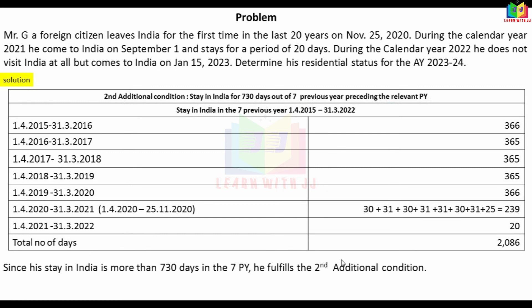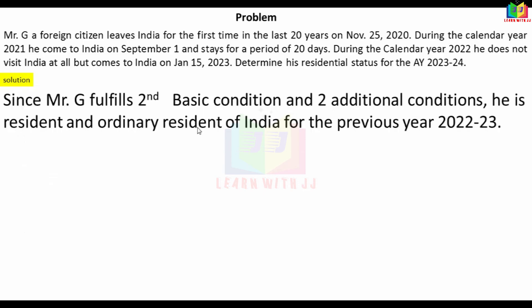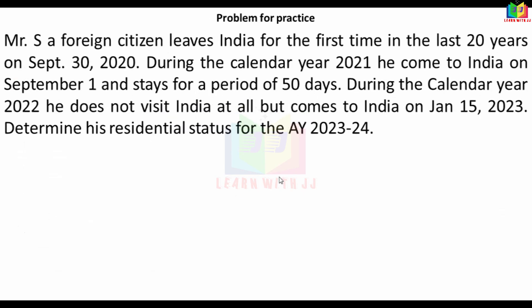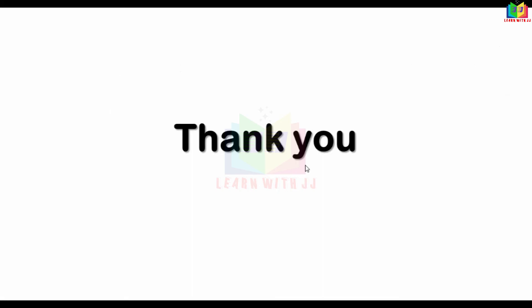One basic condition and two additional conditions are fulfilled, so Mr. G is also a Resident and Ordinarily Resident of India for the previous year 22-23. There is one more problem related to this topic — please do it and comment your answer. Thank you for your patient listening.